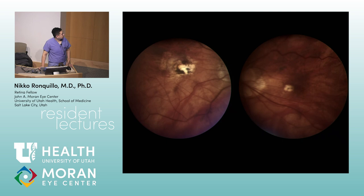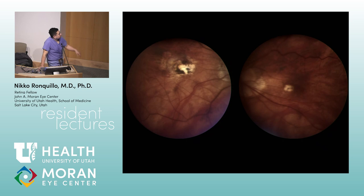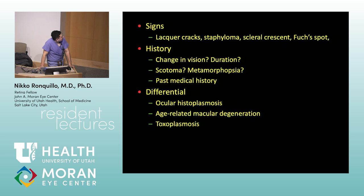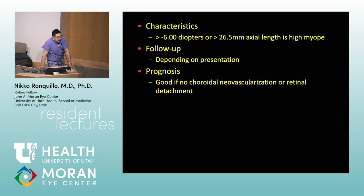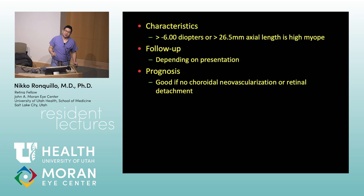Next — pathologic myopia / myopic degeneration. You see peripapillary atrophy and overall thinned retina. The definition of pathologic myopia is greater than -6 diopters or greater than 26.5 mm axial length.